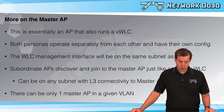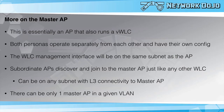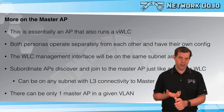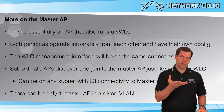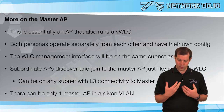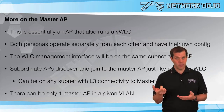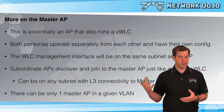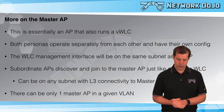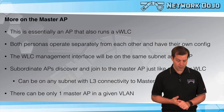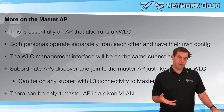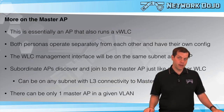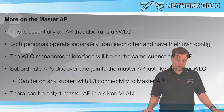Subordinate APs discover and join the master AP just like any other controller — using broadcast, DHCP option 43, DNS, or primary/secondary/tertiary controller settings. They send discovery requests; the controller receives them on its management interface, which also serves as the AP manager interface — there are no standalone AP manager interfaces. The controller responds, the AP joins, and the subordinate AP is up. The subordinate AP does not need to be on the same subnet as the master AP; they just need layer three reachability.